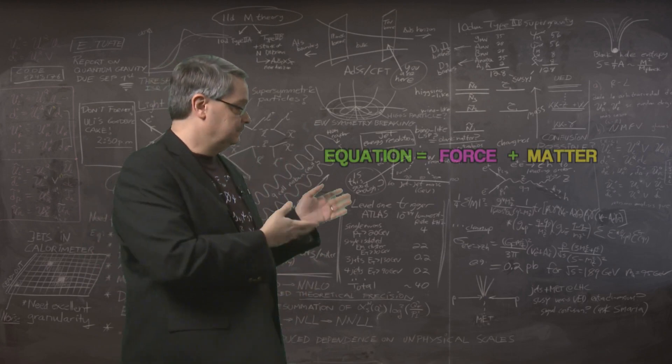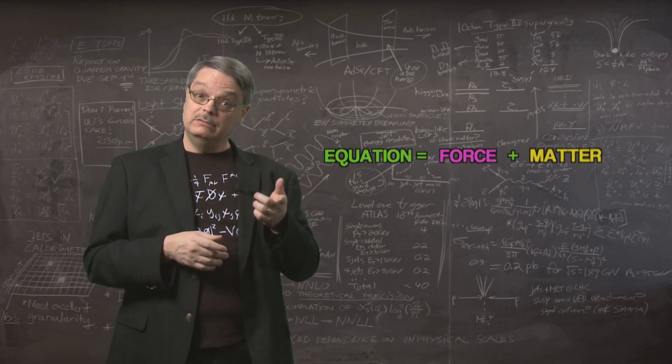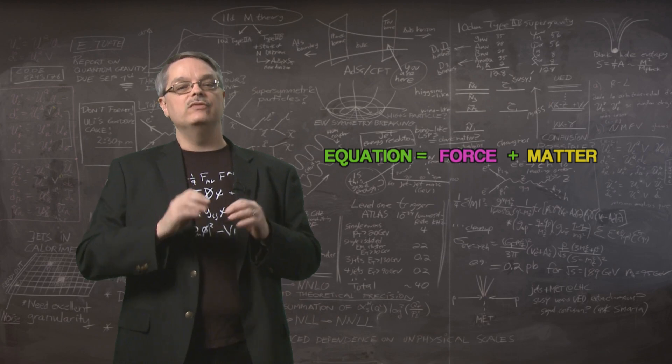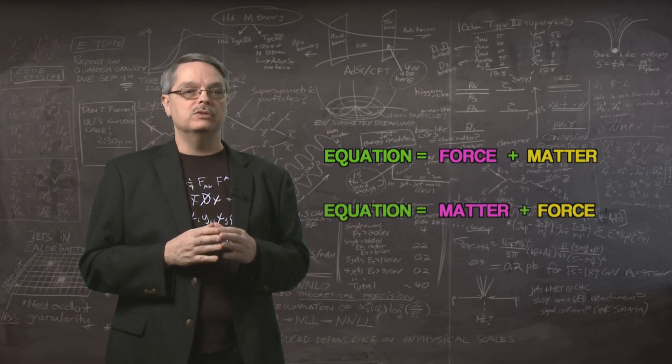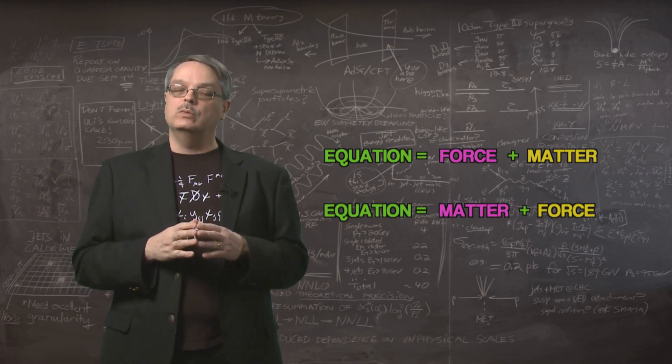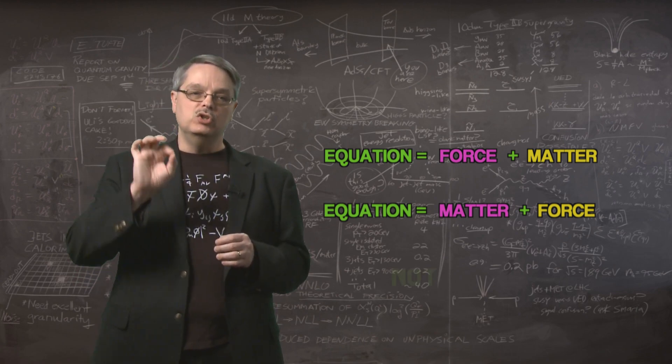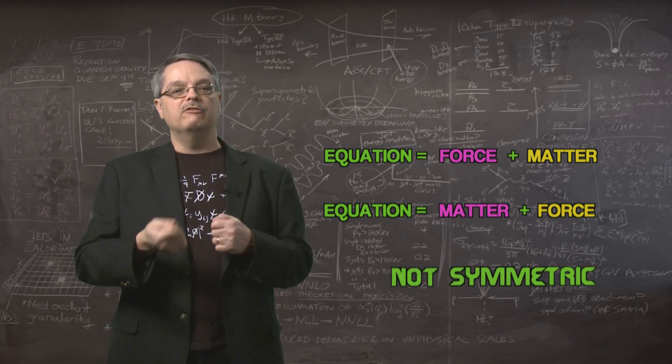The basic equation is shown here. It has a term for matter and a term for forces, and each of them is a different color. If we swap matter and forces, but not the colors, we see that the new equation doesn't look like the old one. This equation is not symmetric under the swapping of force and matter.